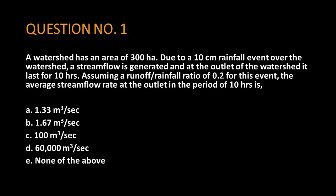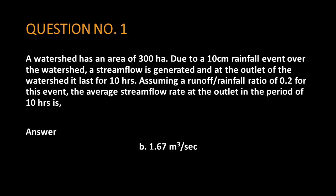Again, a watershed has an area of 300 hectares. Due to a 10 cm rainfall event over the watershed, a streamflow is generated and at the outlet of the watershed it lasts for 10 hours. Assuming a runoff-rainfall ratio of 0.2 for this event, the average streamflow rate at the outlet in the period of 10 hours is — the answer is b: 1.67 cubic meters per second.